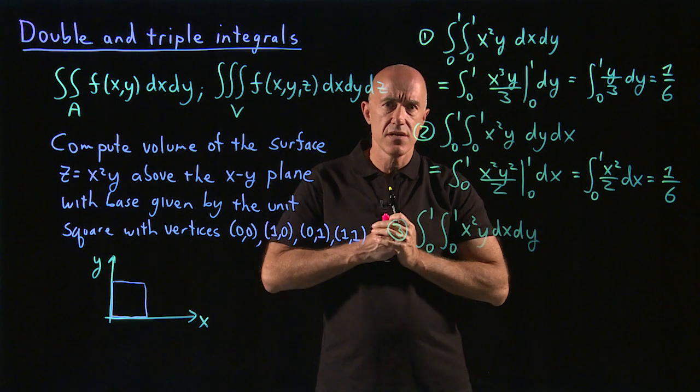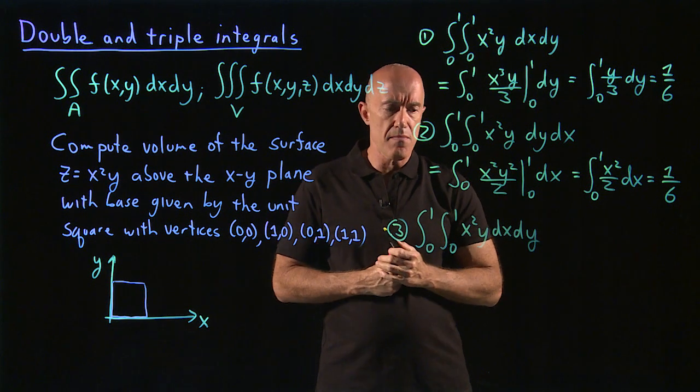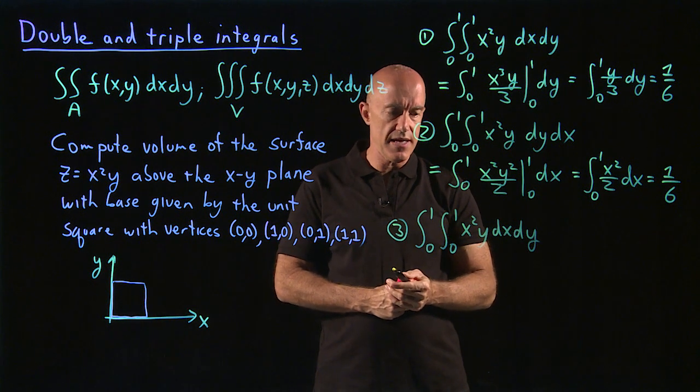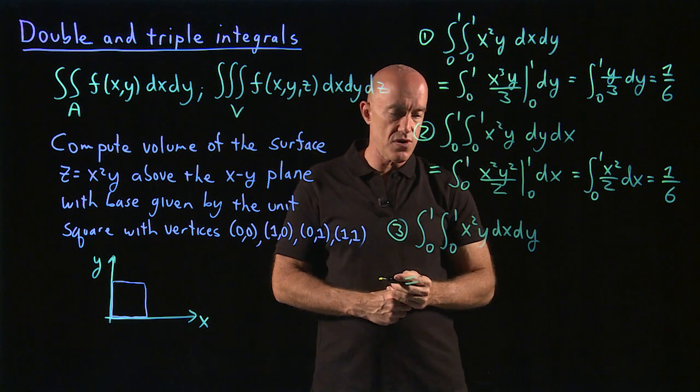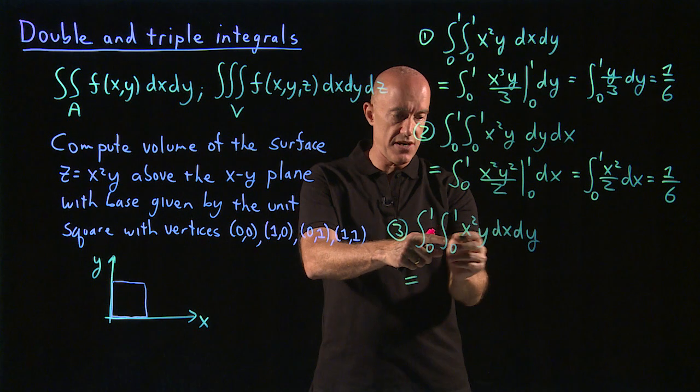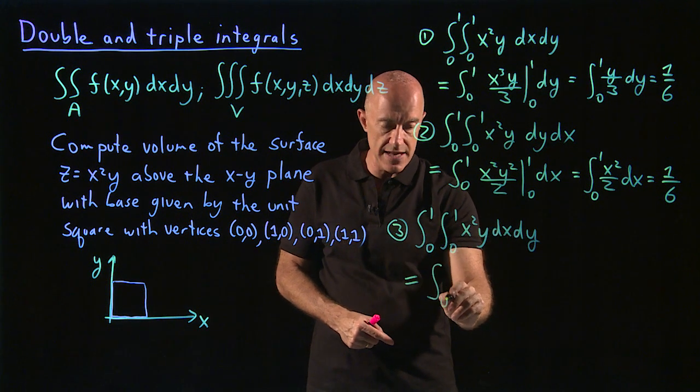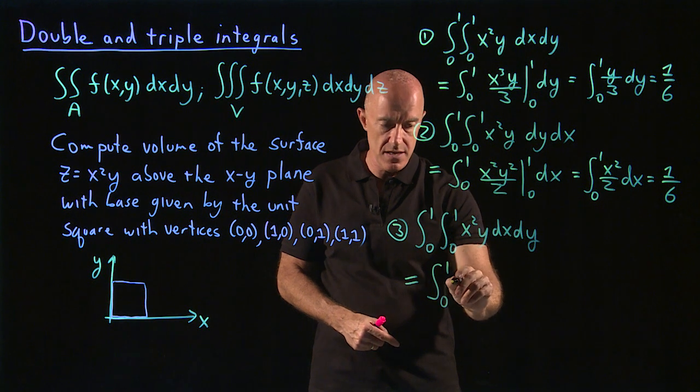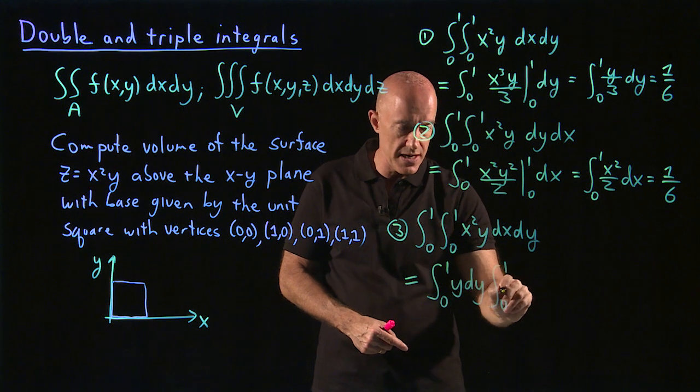Because these limits don't depend on x and don't depend on y, my preferred method for doing this integral would just be to do these two integrals separately. So the x squared dx is the inner one, the y dy is the outer. So you can write this as 0 to 1, y dy times 0 to 1, x squared dx.